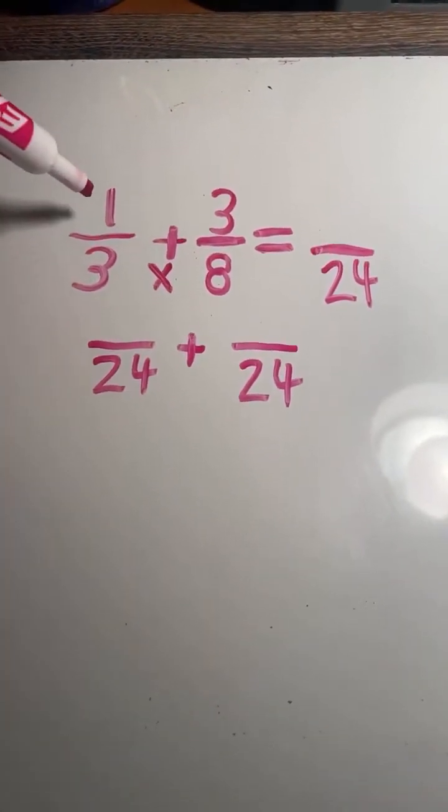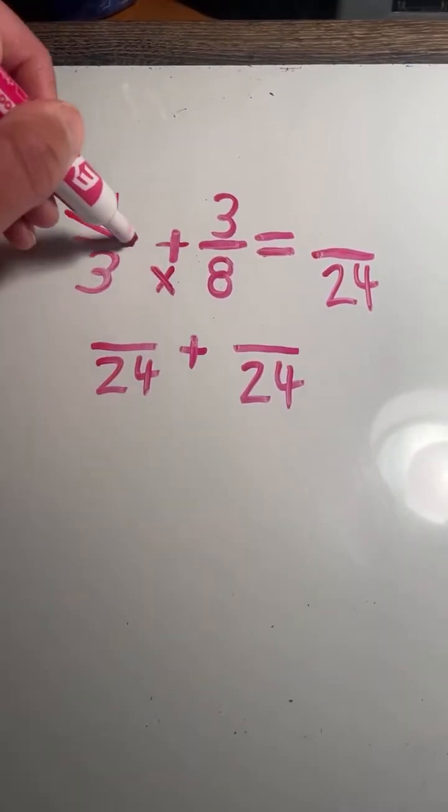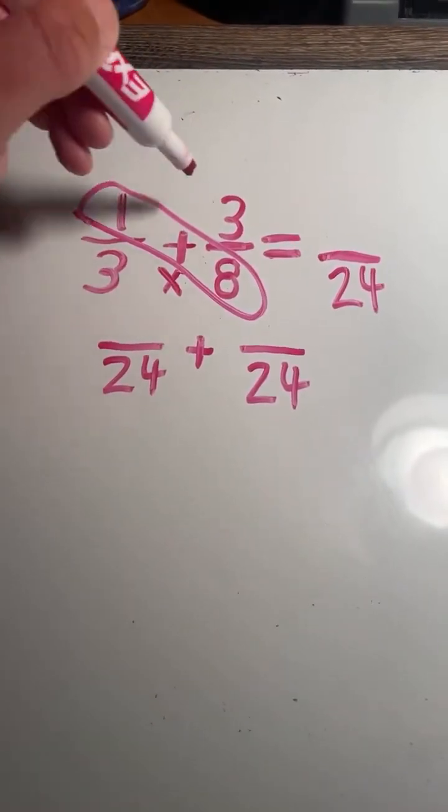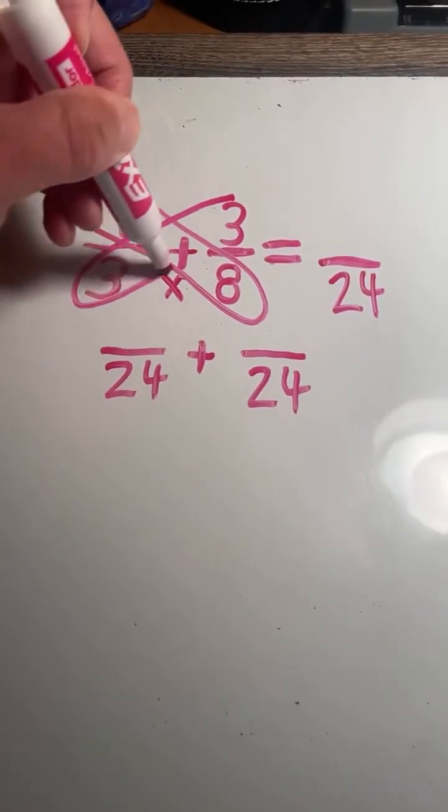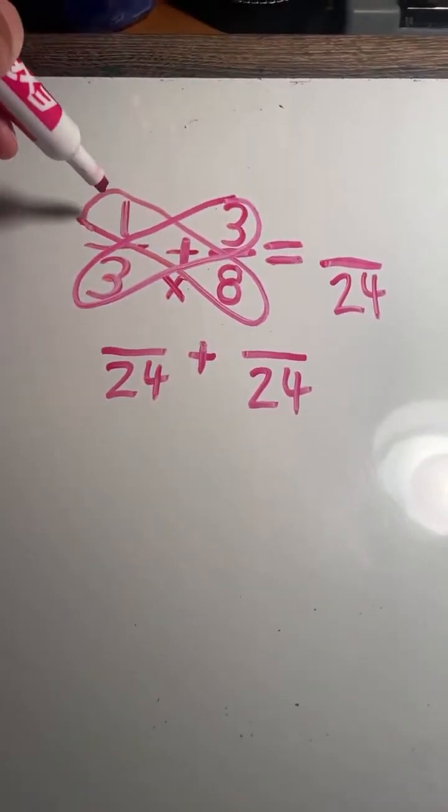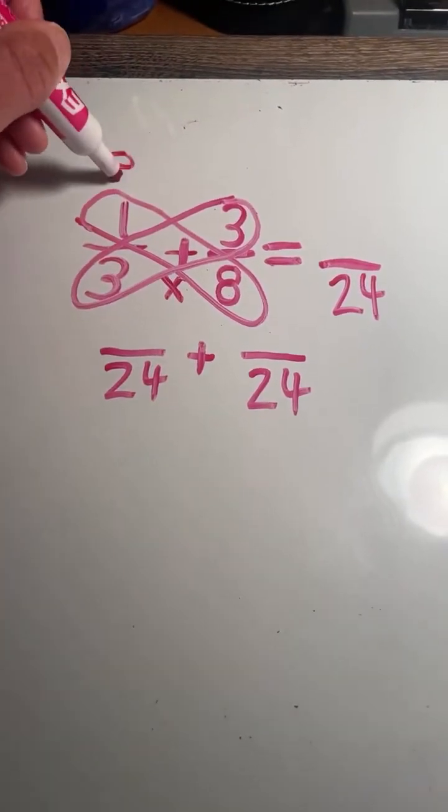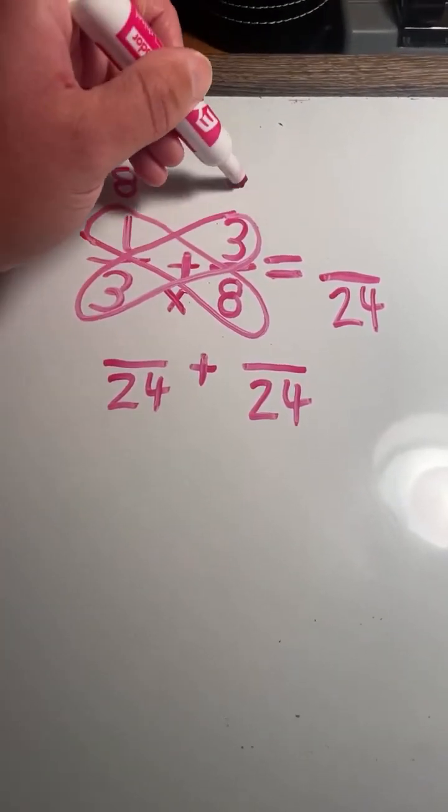Next we multiply each numerator times the opposite denominator. So the 1 in 1/3 we have to multiply times 8. The 3 in 3/8 we have to multiply times 3. 1 times 8 equals 8. 3 times 3 equals 9.